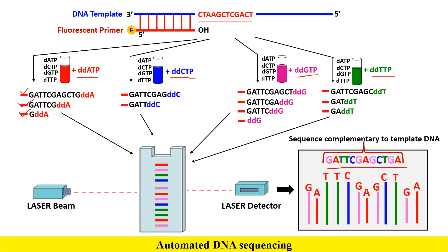So in automated DNA sequencing, we use fluorescently labeled dideoxy nucleotide triphosphates, and with the help of a laser beam the separated fragments produce a chromatogram generated by the computer. Most of the work is done by the computer. Unlike the traditional dideoxy Sanger method, which uses autoradiography and radioactively labeled dideoxy nucleotide triphosphates, here we use fluorescent labels, so there is a low risk of exposure to radioactive elements.